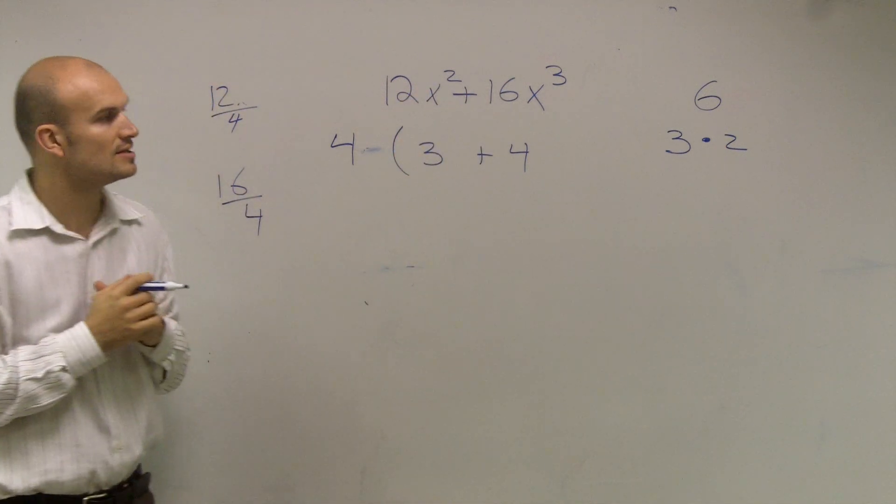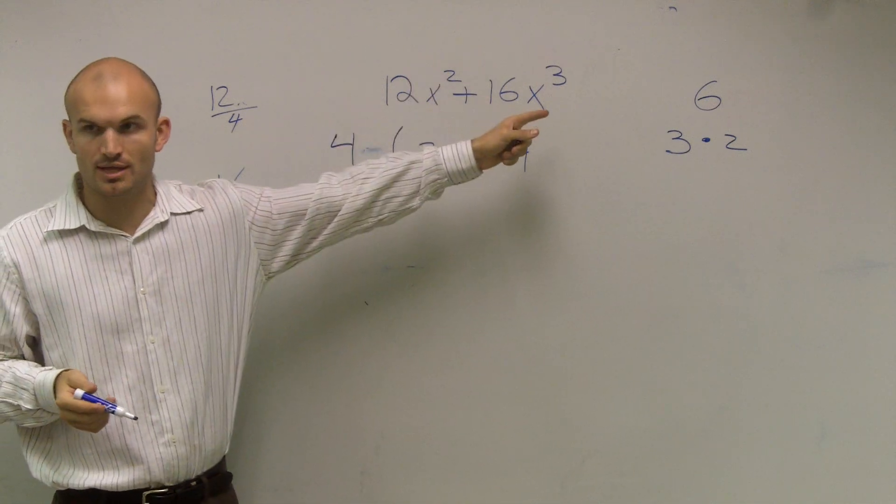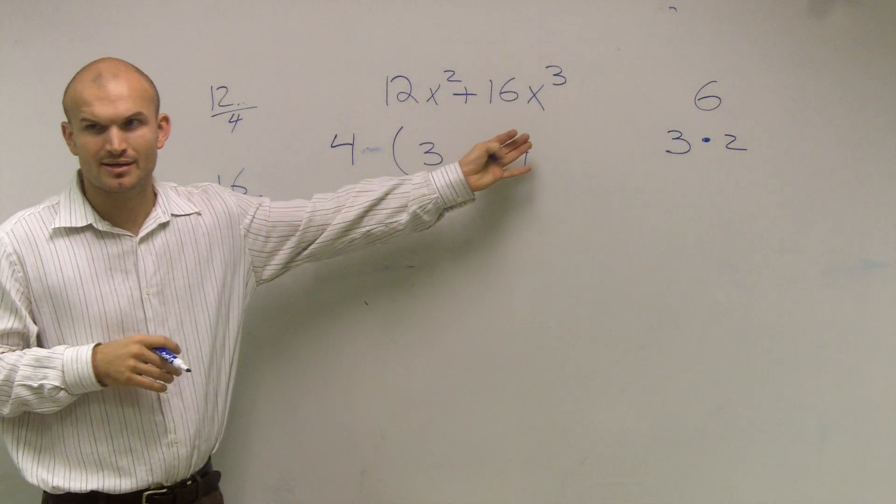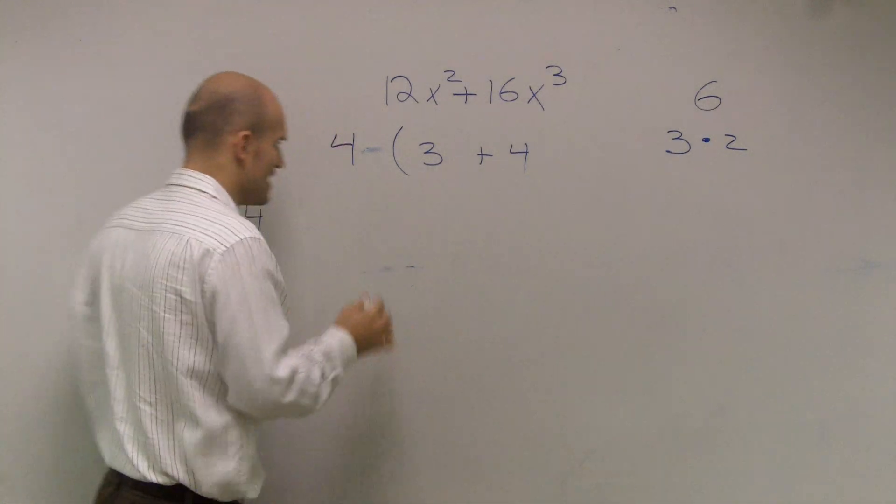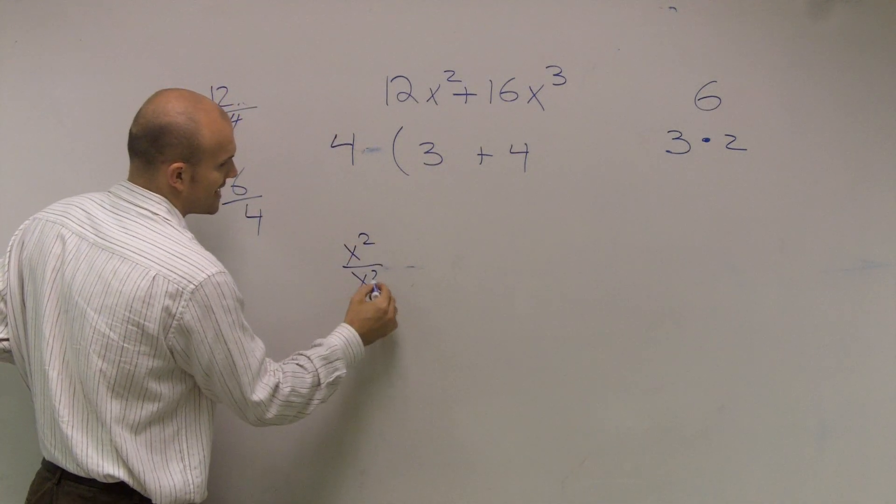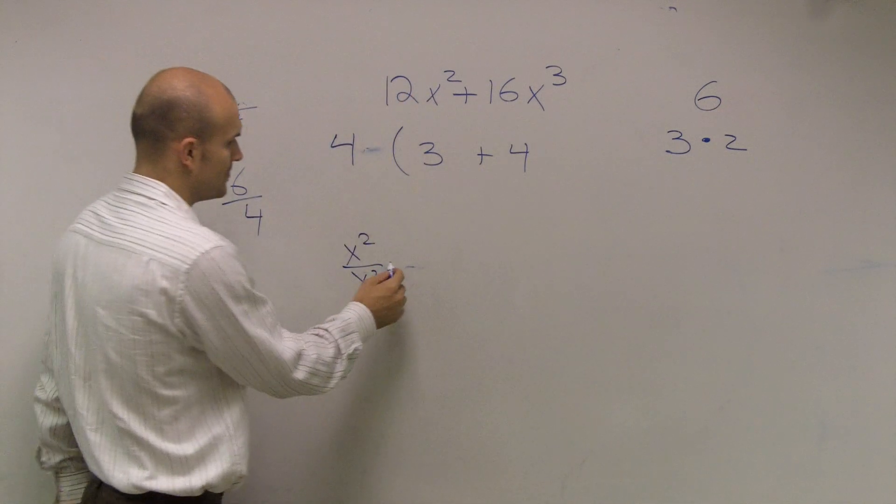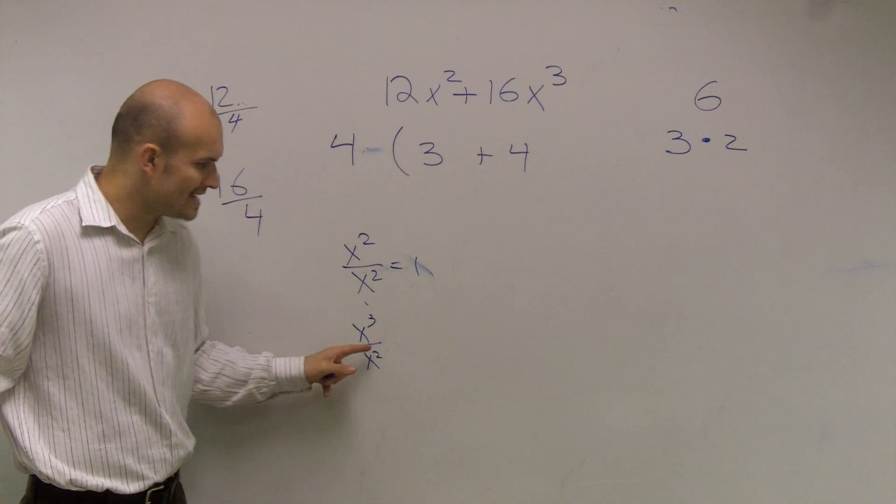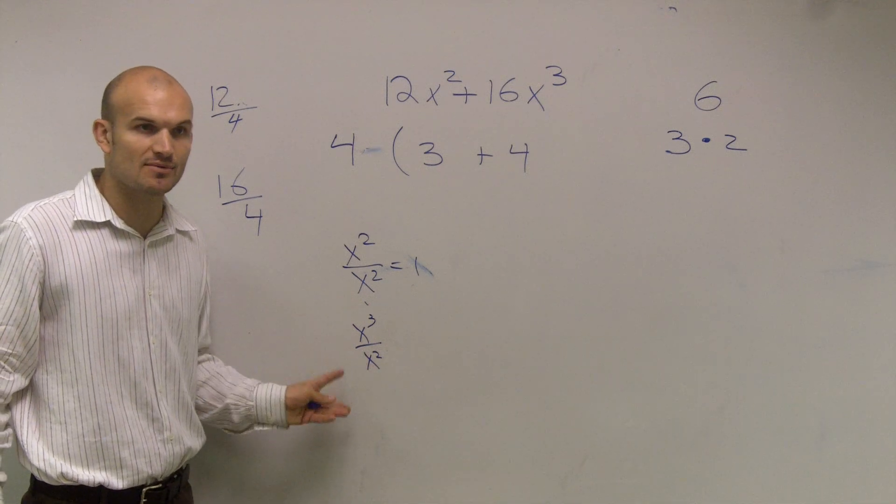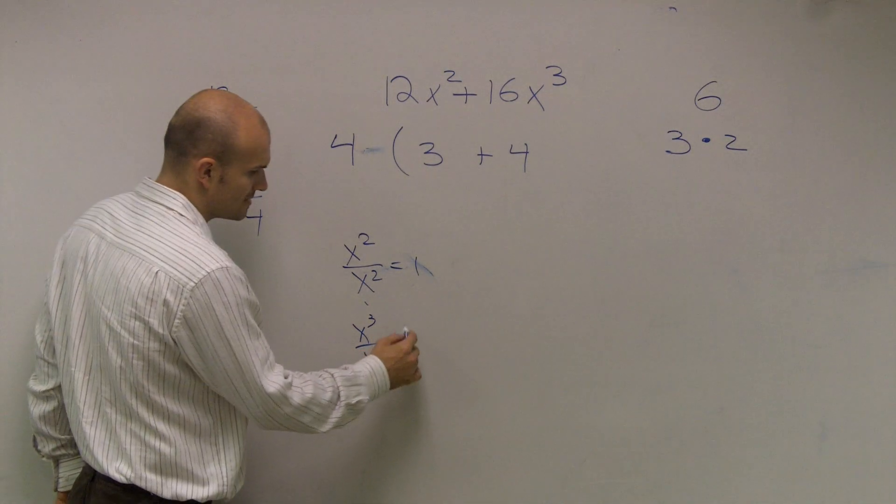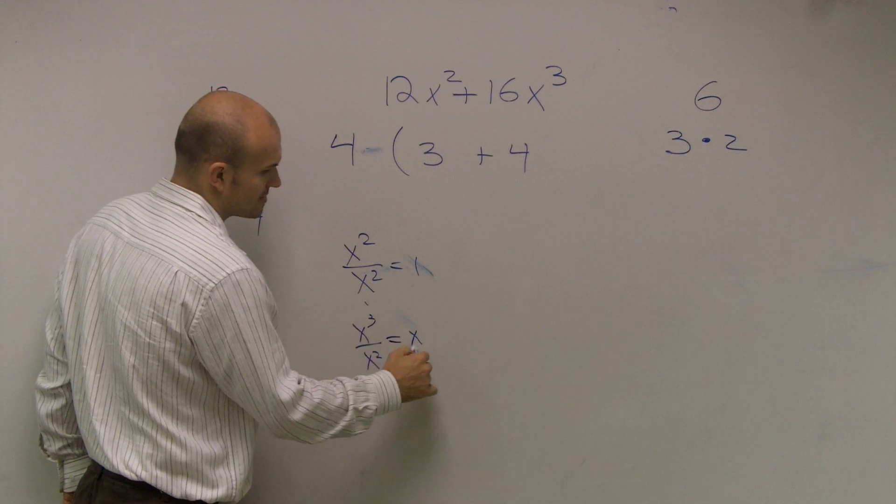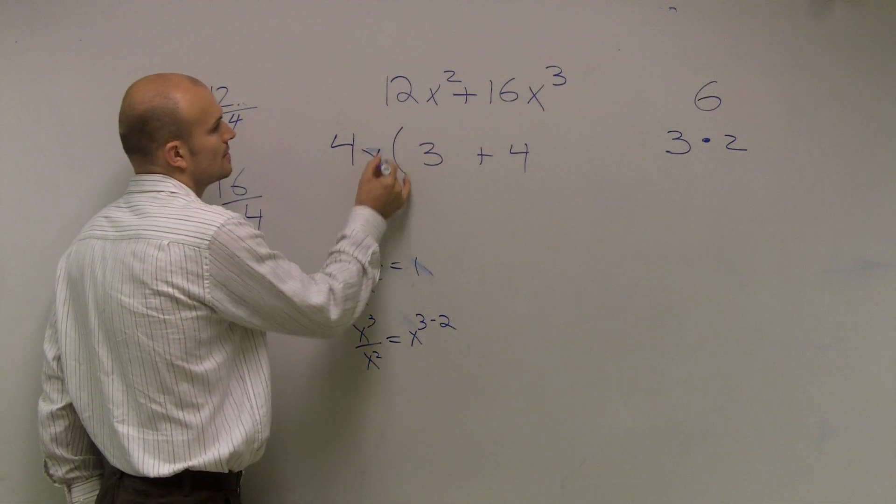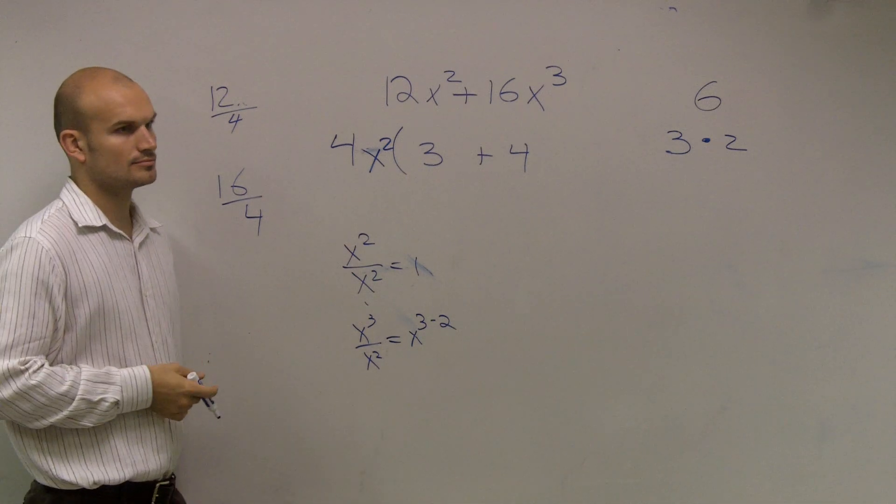And what you notice is that the largest variable that goes into both of them would be x². Now, you say, but Mr. McGloughlin, how does two go into three? Remember, when we're dividing fractions, I know x² goes into x² because that equals 1. But how does x³ divide into x²? Well, remember, we're not dividing the exponents into each other. What happens when you divide numbers with the same base exponents? You subtract the exponents. So the largest variable that goes into both of these is x².